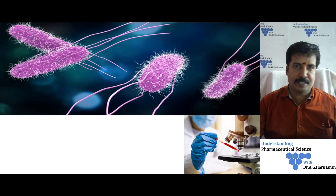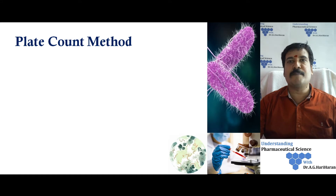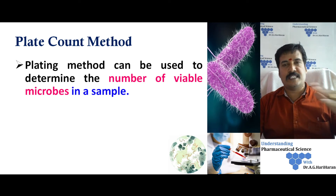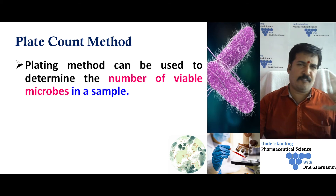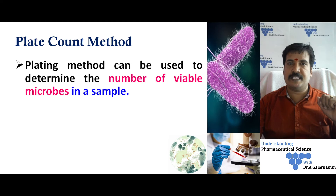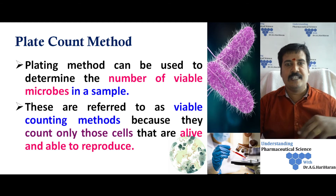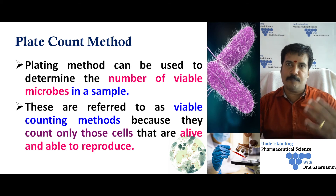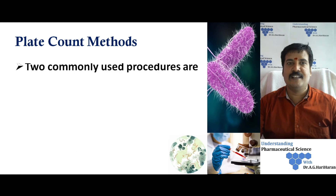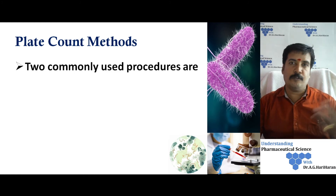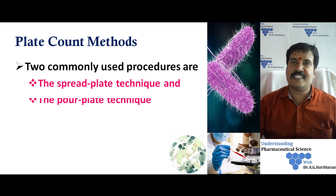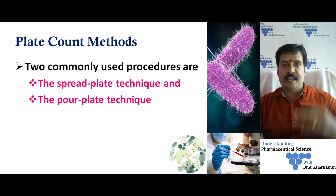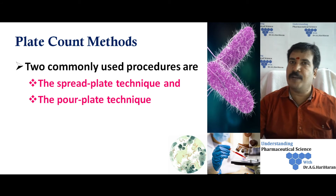Two methods are employed: the plate count method and the membrane filtration method. In the plate count method, the sample is plated on an agar surface and the number of viable cells present in the sample is counted. Viable cells can only divide and form a colony, so based on the number of colonies we calculate the number of viable cells. This plate counting technique is done by two ways: the spread plate technique and the pour plate technique.